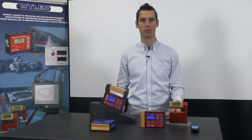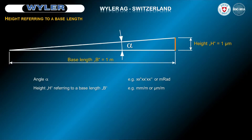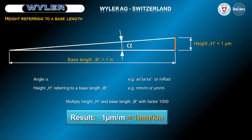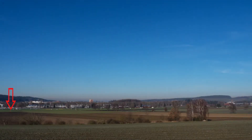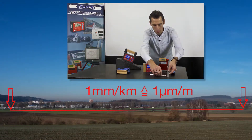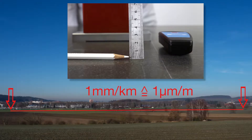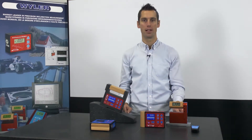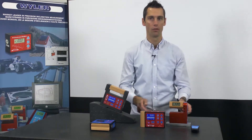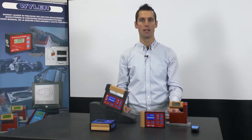How big is an inclination of 1 µm per meter? If the height and the base length are multiplied by 1000, according to the theorem on intersecting lines, the relations remain the same and we have a triangle with a height of 1 mm and a base length of 1 km. For clarification, we stretch a cord over a distance of 1 km and lift it at one end by a millimeter. So we change the inclination to 1 µm per meter, which we get displayed by the blue level. This means that for our blue level, based on the distance between its points of support of 125 mm, it even measures a height difference of 1/8 of a µm.